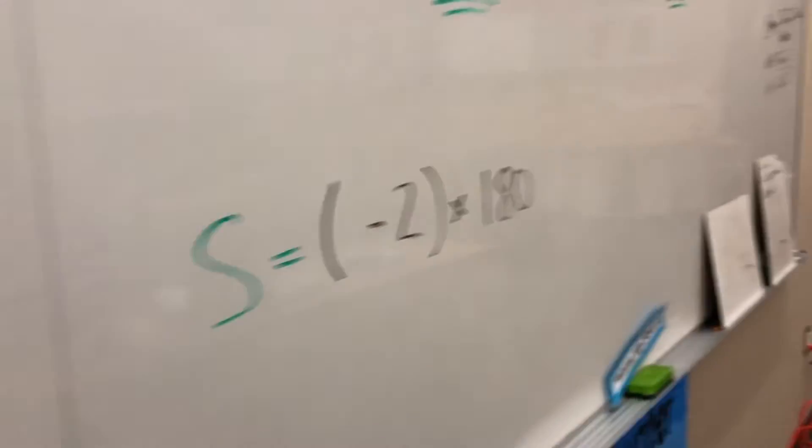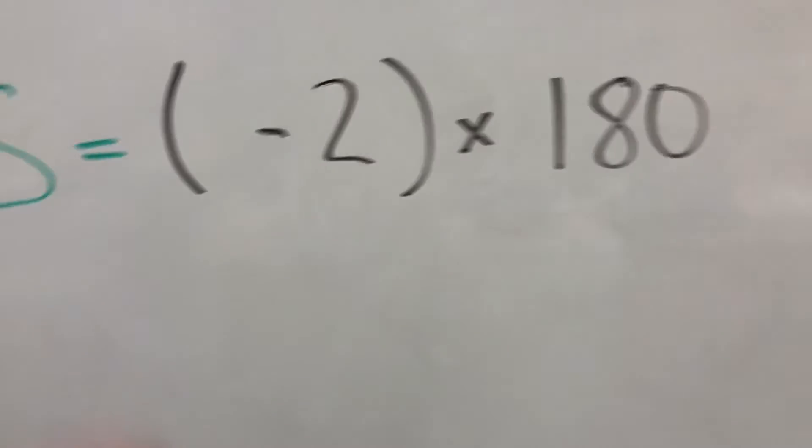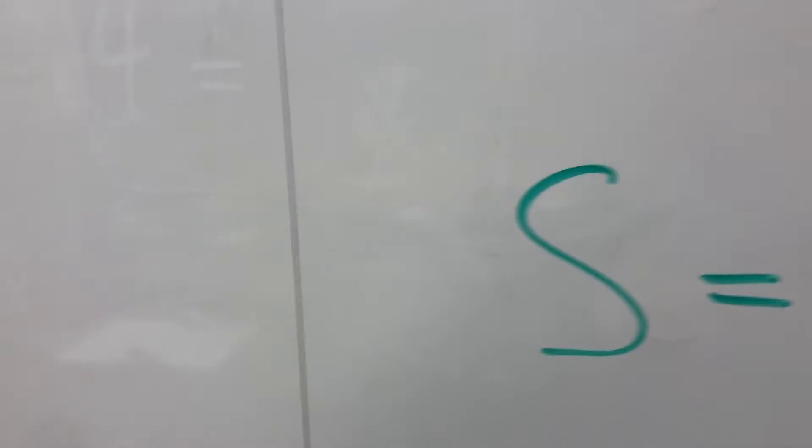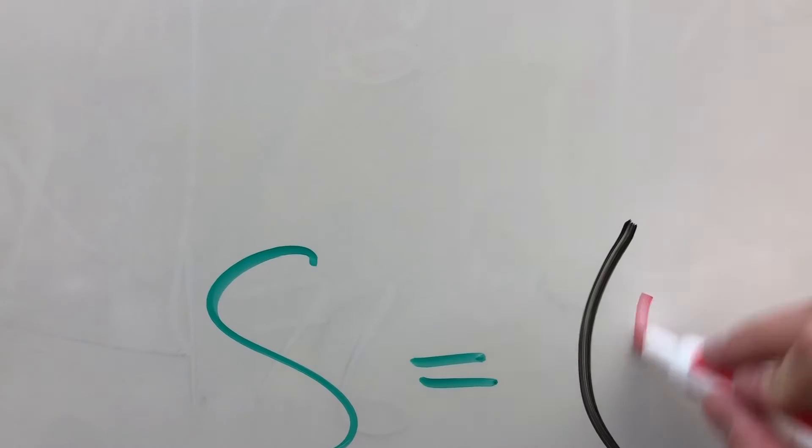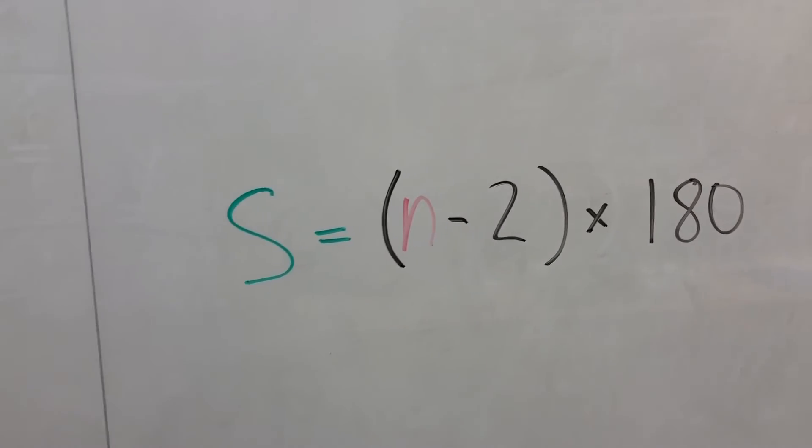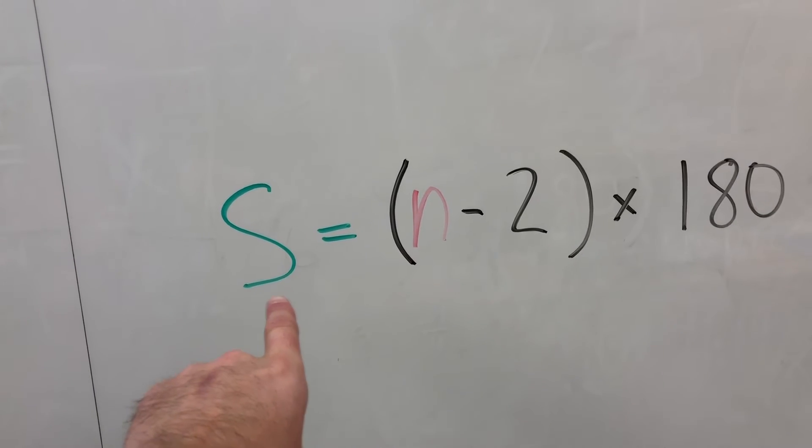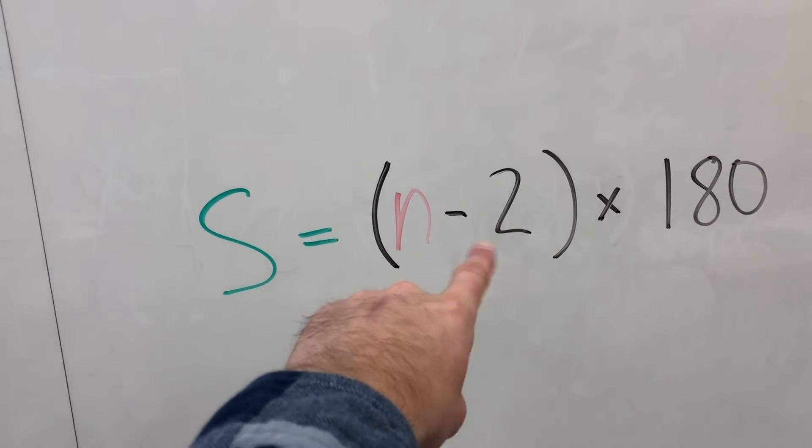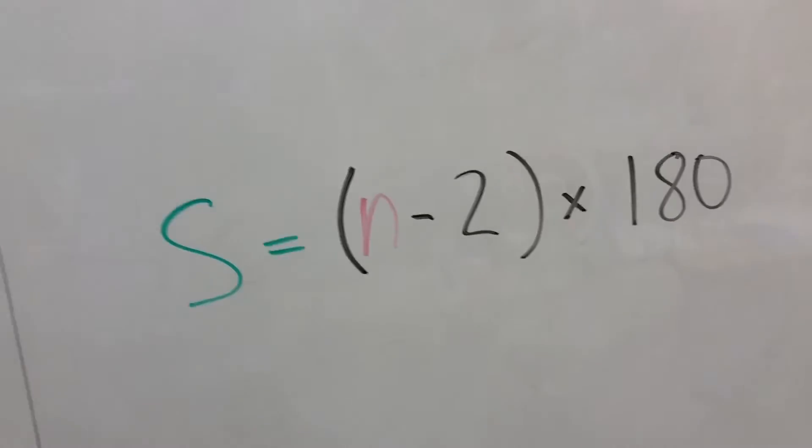Now, there's also this super fancy formula you can use to help you in case you had to find the angle sum of some kind of a hundred-sided polygon or something like that. And that is this formula. The angle sum is equal to the number of sides minus two times 180.